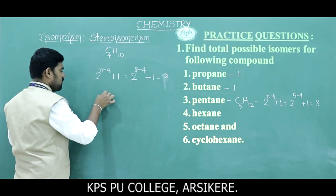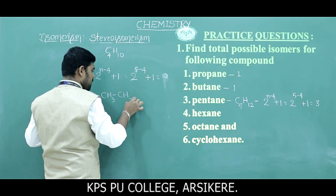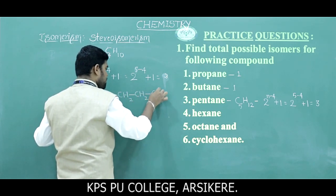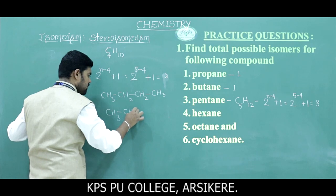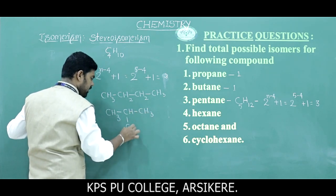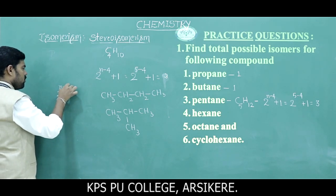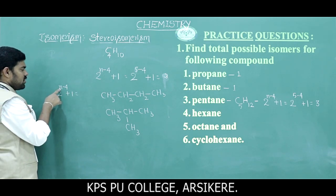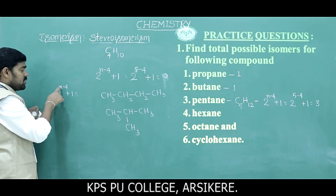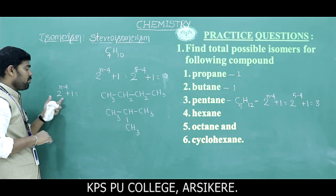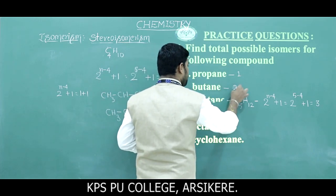Butane can be written as CH3−CH2−CH2−CH3, or in the branched form CH3−CH(CH3)−CH3. So there are two forms for butane, confirming the formula: 2^(n−4)+1 with n=4 gives 4−4=0, 2^0 = 1, and 1+1 = 2. Anything to the power of 0 is always 1.